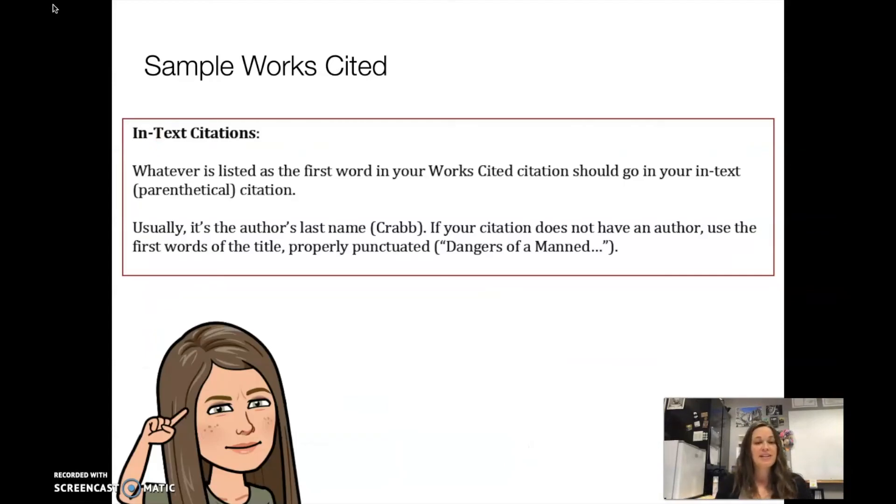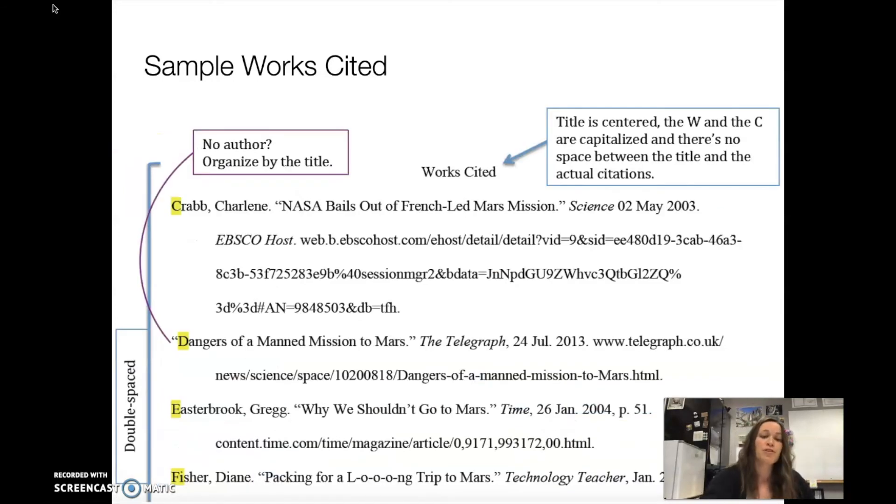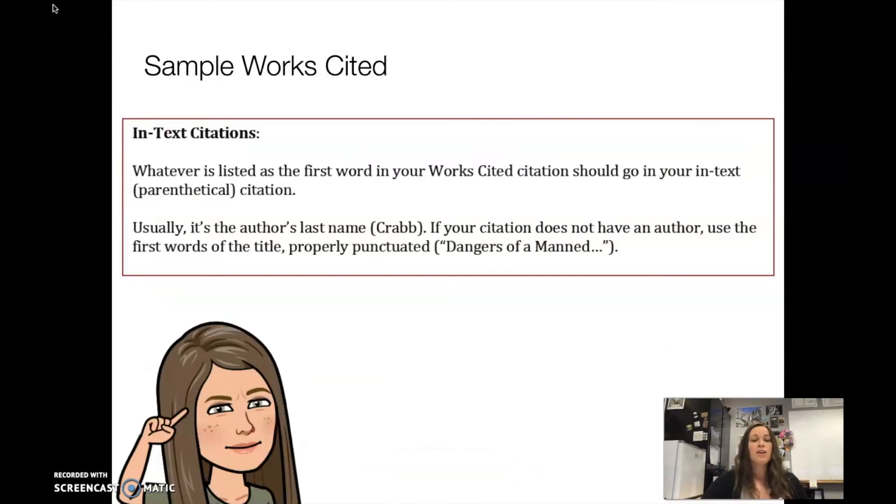When it comes to in-text citations, something that's important to note is that whatever is listed as the first word on your works cited citation is what should go in your in-text or parenthetical citation. Usually that means the author's last name, like Crabb. If your citation does not have an author, you'll use the first words of the title properly punctuated. So, if you go back, the first example there I have is Crabb, the second one is Dangers of a Man. If you go back to my first two citations on my sample works cited, the first one is Crabb. So the first word in the works cited citation is what goes in the parenthetical citation within your work. The second one down, I don't have an author, so I would actually do the title, Dangers of a Man Mission to Mars. Notice too that it is punctuated properly. It's an article title, so it should be in quotation marks. Also I shortened the title because it was a really long one. I did that and I indicated that I shortened it by using the ellipses. That's the three dots at the end, the dot, dot, dot, and you're welcome to do that in your parenthetical citations.